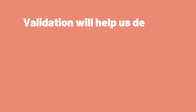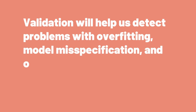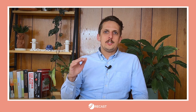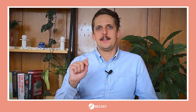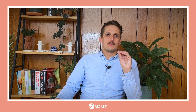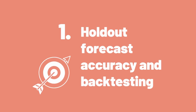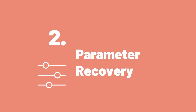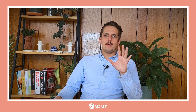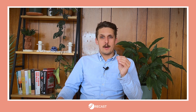This is where validation comes in. Validation helps us detect problems with overfitting, model misspecification, and other common modeling problems. To get model validation right, we need to approach the problem from multiple different angles — since the truth is unknown and unknowable, we validate with multiple strategies. The most important methods are: one, holdout forecast accuracy and back testing; two, parameter recovery; three, stability and robustness checks; four, lift tests and experimentation; and five, dynamic spin deployment and forecast reconciliation.